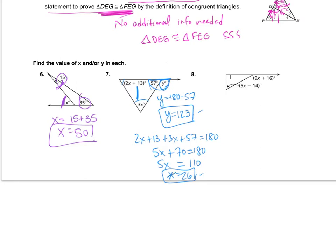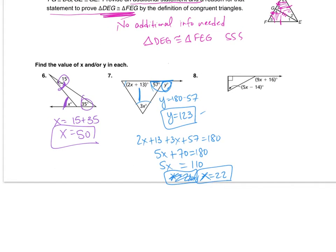Correction — right here, X should be 22. So 110 divided by 5 is 22. For number 8, we're going to use the exterior angle equals the sum of the two remote interiors. So 9X plus 16 equals 90 plus 5X minus 14. Subtracting 16 from each side, 4X equals 60. So X equals 15.